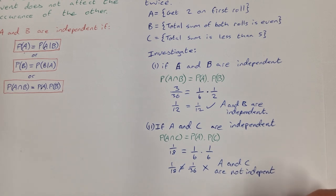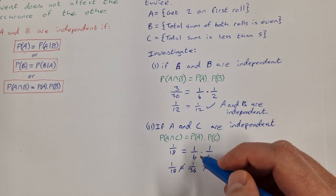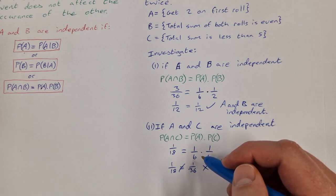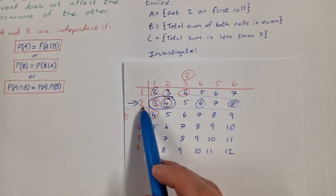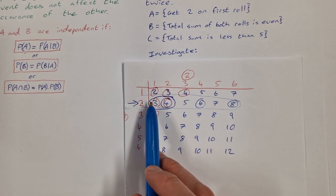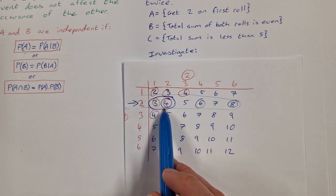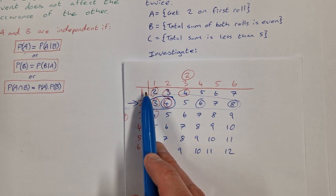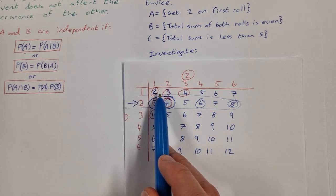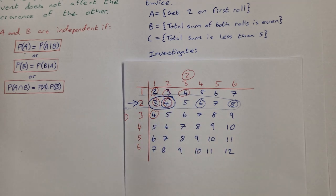That makes sense because if you think about A and C — A is getting a 2 on the first roll and C is getting a sum less than 5. If you get a 2 on the first roll, you're restricted to only 2 ways of getting less than 5: you have to get a 1 or a 2 on your second roll. Whereas if you got a 1, you could get a 1, 2, or 3 on your second roll to get less than 5. So getting a 2 does affect whether or not you'll get less than 5.